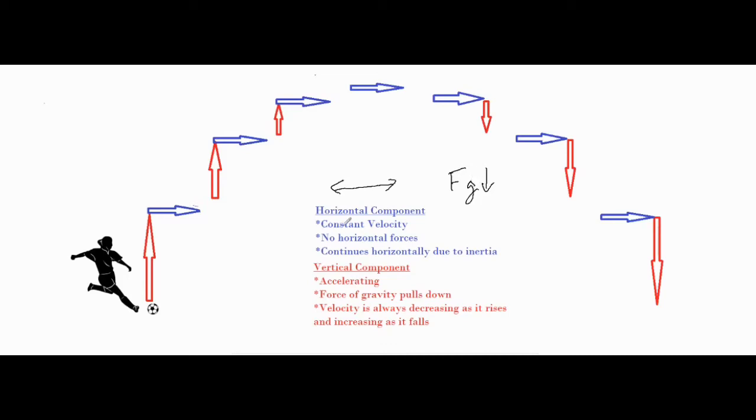When something is in projectile motion and it's moving up and over, there is only FG, the force of gravity pulling it straight down. That doesn't affect how fast it moves left and right. Therefore it has no change in velocity moving from left to right. Because there are no horizontal forces, it continues horizontally due to inertia.